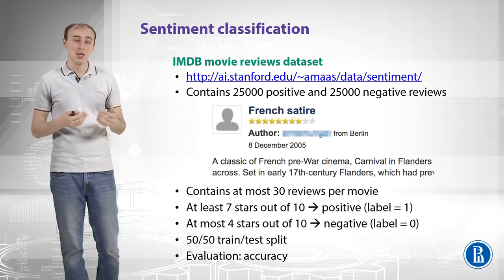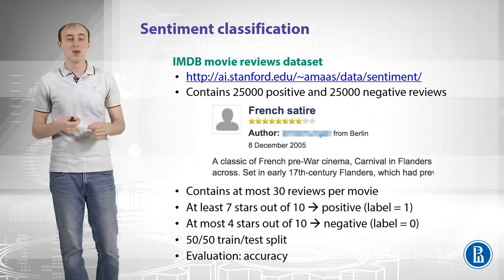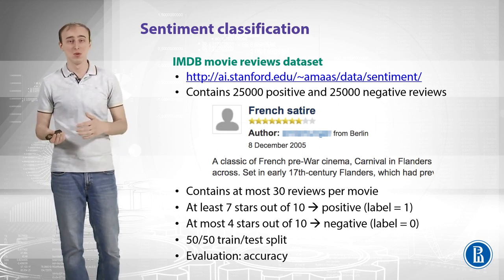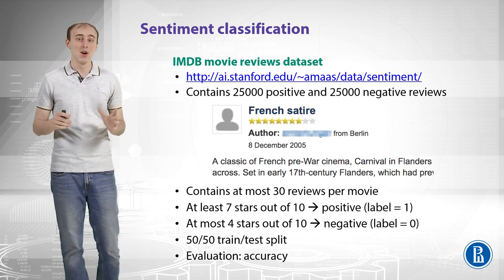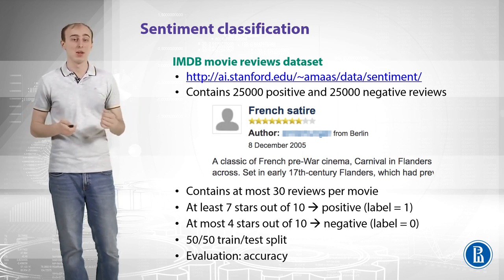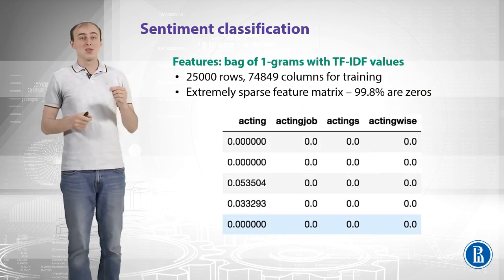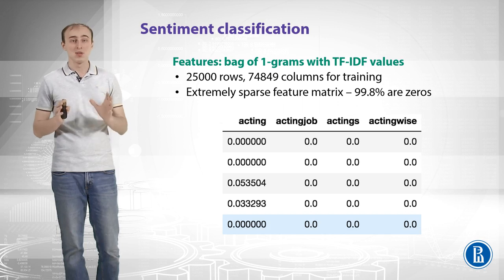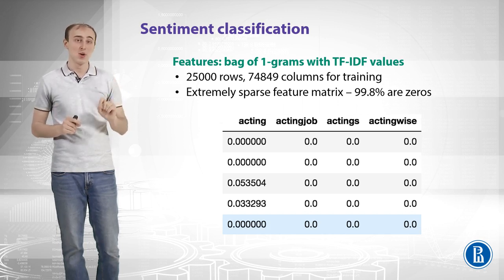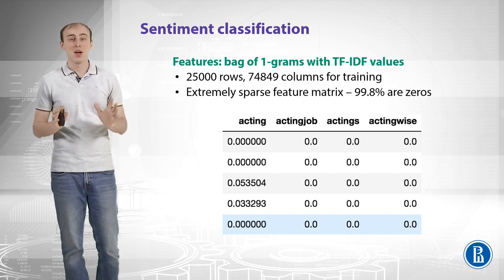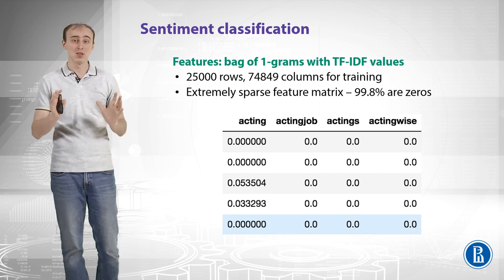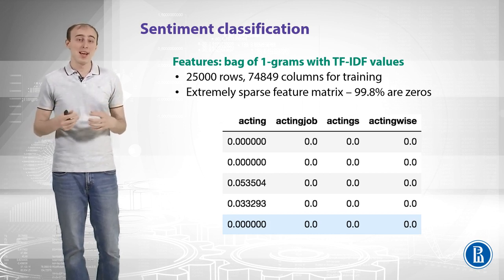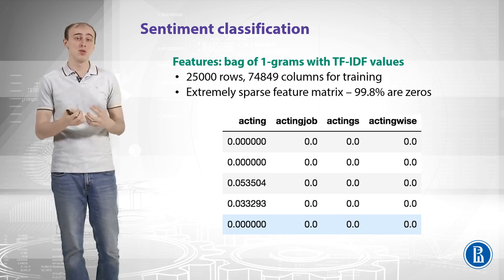For evaluation we can use accuracy, and that works here because we have the same number of positive and negative reviews — the dataset is balanced in terms of class sizes. Now for our first model, let's take bag of 1-grams with TF-IDF values. The result is a feature matrix of 25,000 rows and 75,000 columns — a pretty huge matrix, and what is more, it is extremely sparse. About 99.8% of all values in that matrix are zeros, which applies some restrictions on the models we can use.